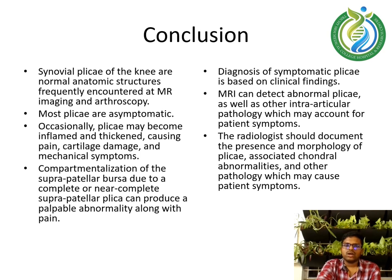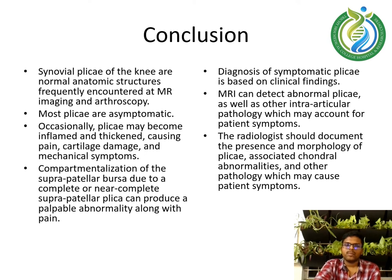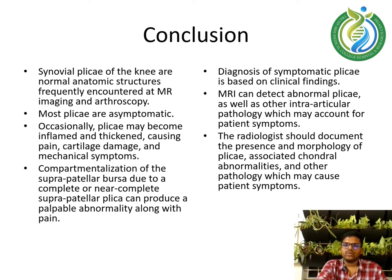Synovial plicae of the knee are normal anatomic structures frequently encountered at MR imaging and arthroscopy. Most plicae are asymptomatic. Occasionally, plicae may become inflamed and thickened, causing pain and cartilage damage with mechanical symptoms. Compartmentalization of the suprapatellar bursa due to a complete or near-complete suprapatellar plicae can produce a palpable abnormality along with pain. Diagnosis of symptomatic plicae is based on clinical findings, and MRI can detect abnormal plicae as well as other intra-articular pathologies. The radiologist should document the presence and morphology of plicae, associated chondral abnormalities, and other pathologies which may cause patient symptoms.